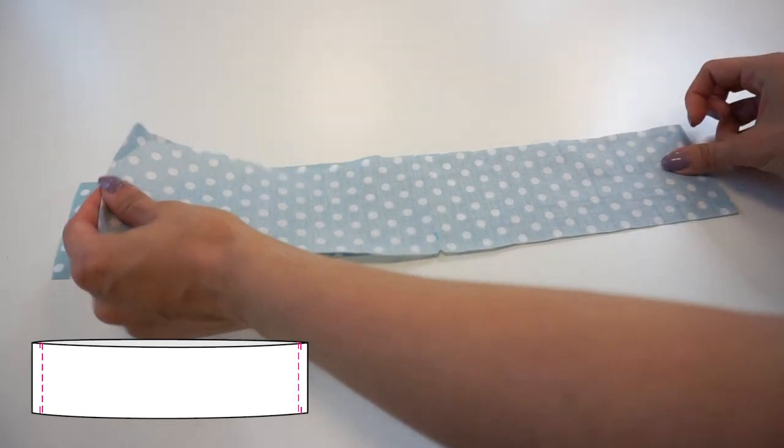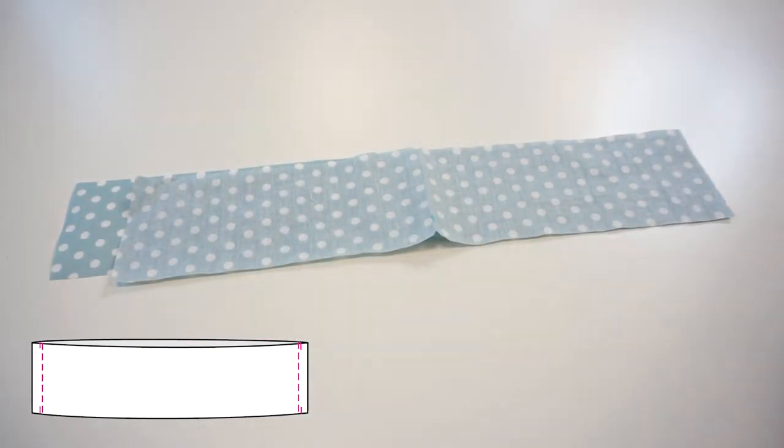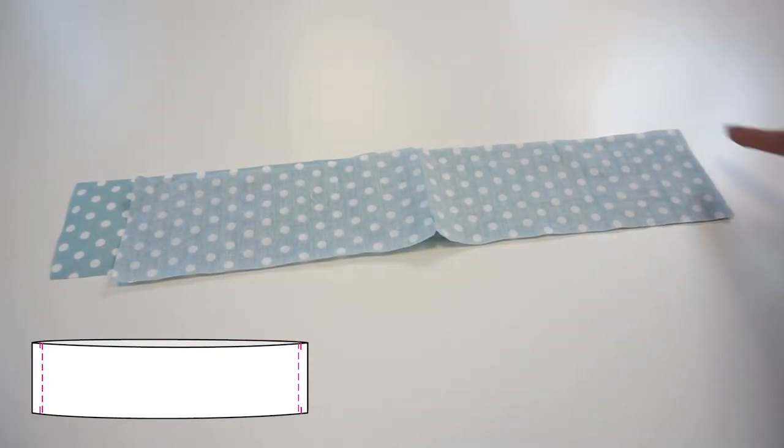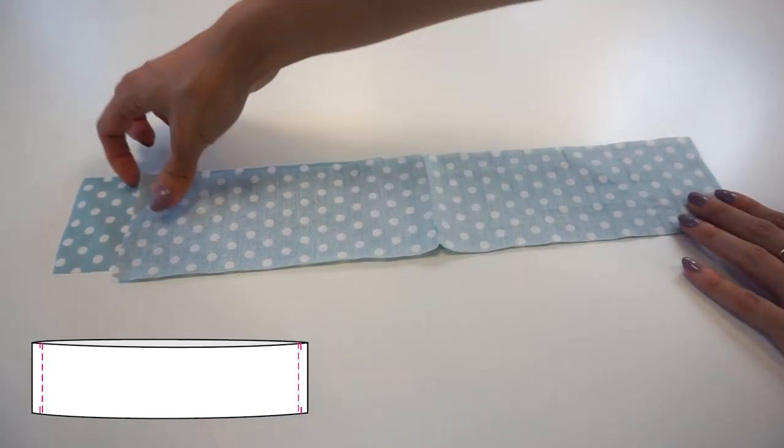Lay the waistband pieces together with the right sides facing. Pin the side seams and stitch.